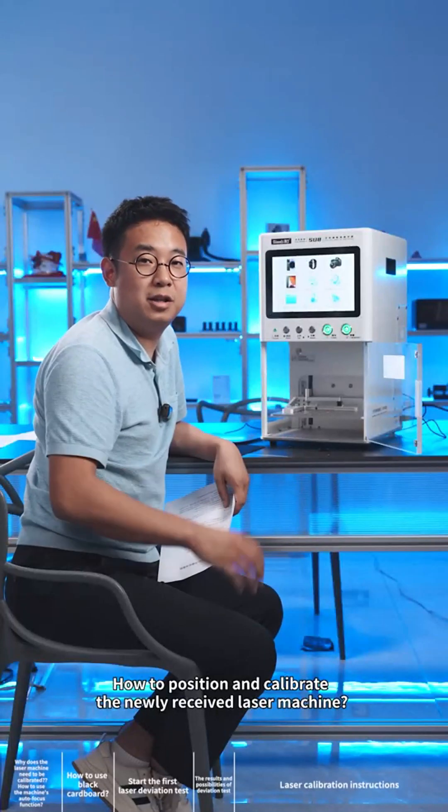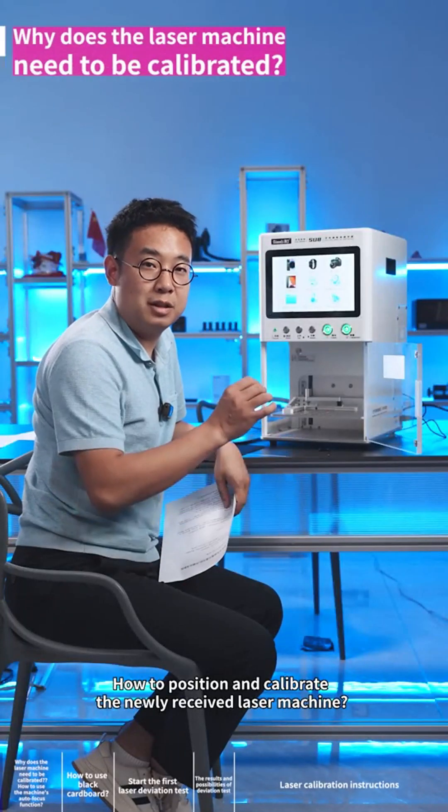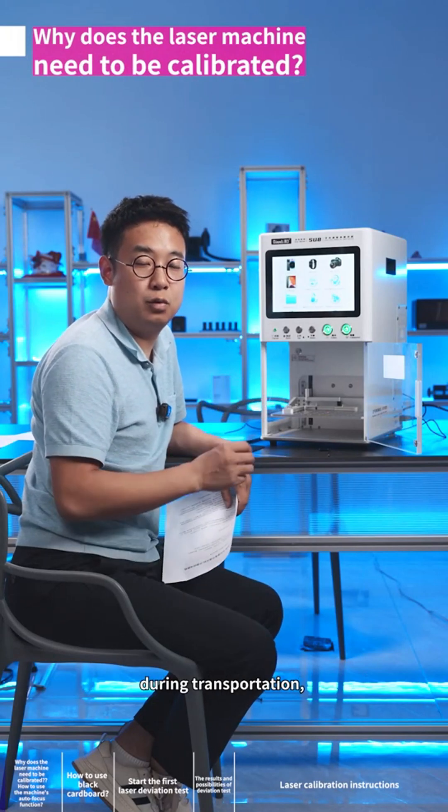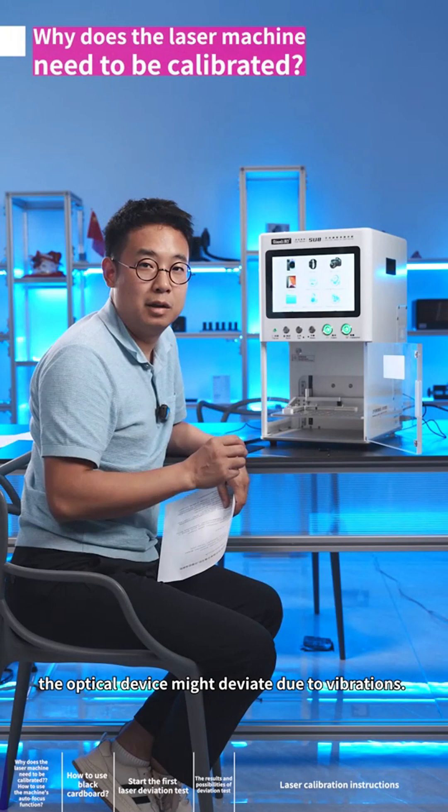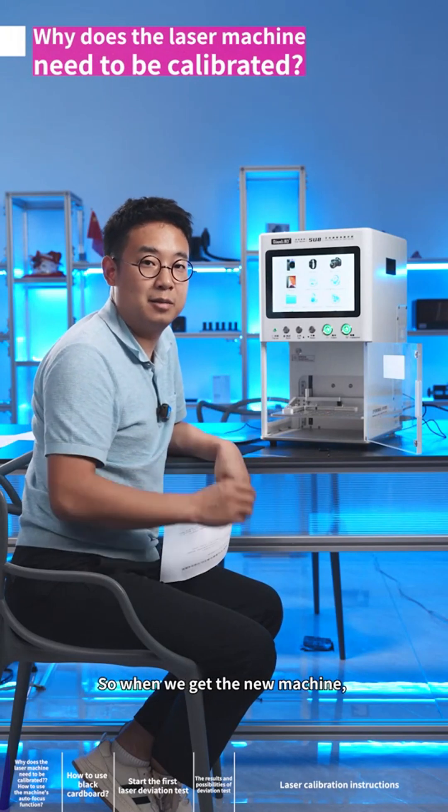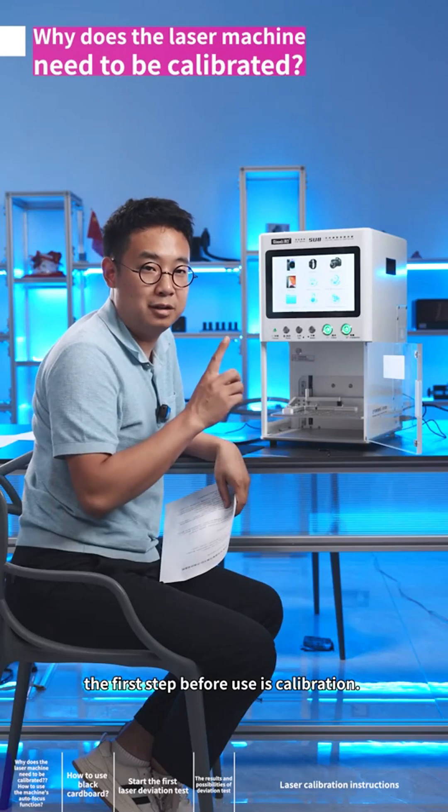How to position and calibrate the newly received laser machine. Since the laser machine is high-precision equipment, during transportation the optical device might deviate due to vibrations. So when we get the new machine, the first step before use is calibration.